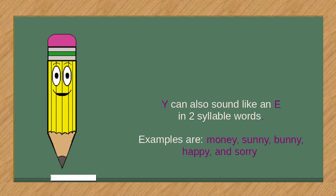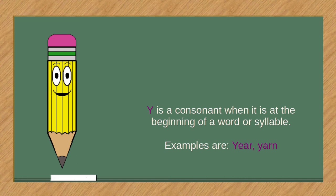Y is a consonant when it is at the beginning of a word or syllable. Examples are year, yarn.